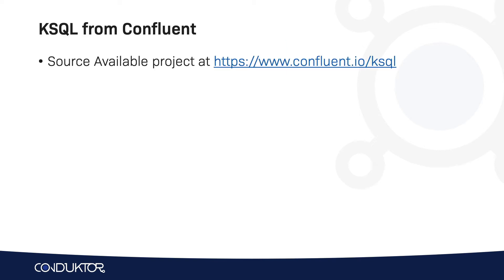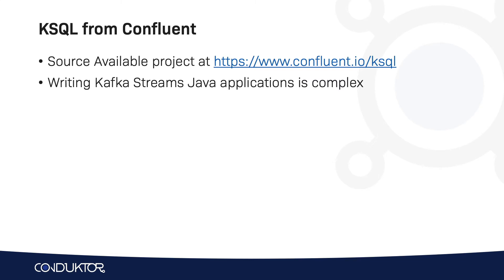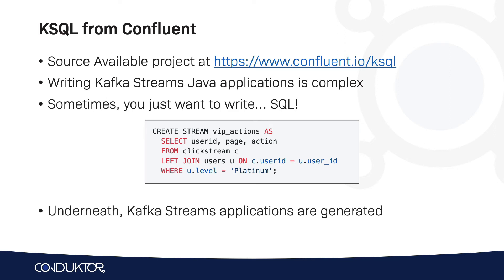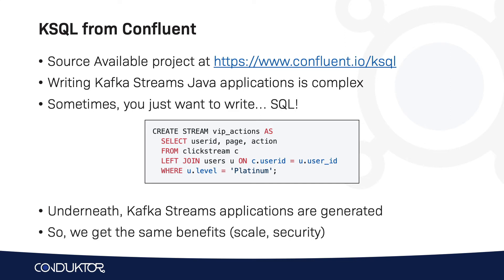This is a project from Confluent, and it comes from the fact that writing Kafka Streams applications in Java is complex, but writing a SQL query can be understood by many people. For example, here we are creating a stream from a join on another stream. Underneath the scene, Kafka Streams applications are generated by ksqlDB. So we get the same benefits of Kafka Streams, such as scale and security, but we have an easier interface using SQL.